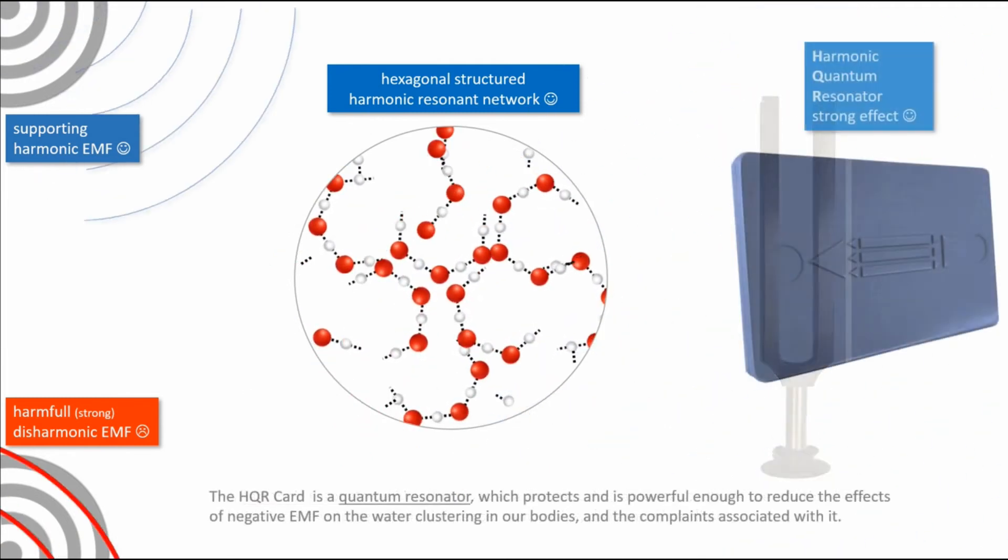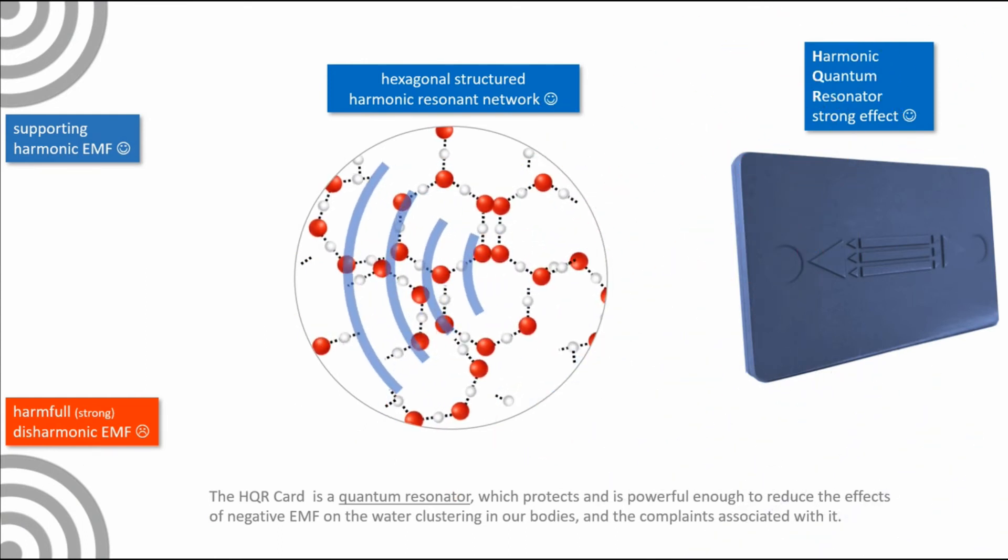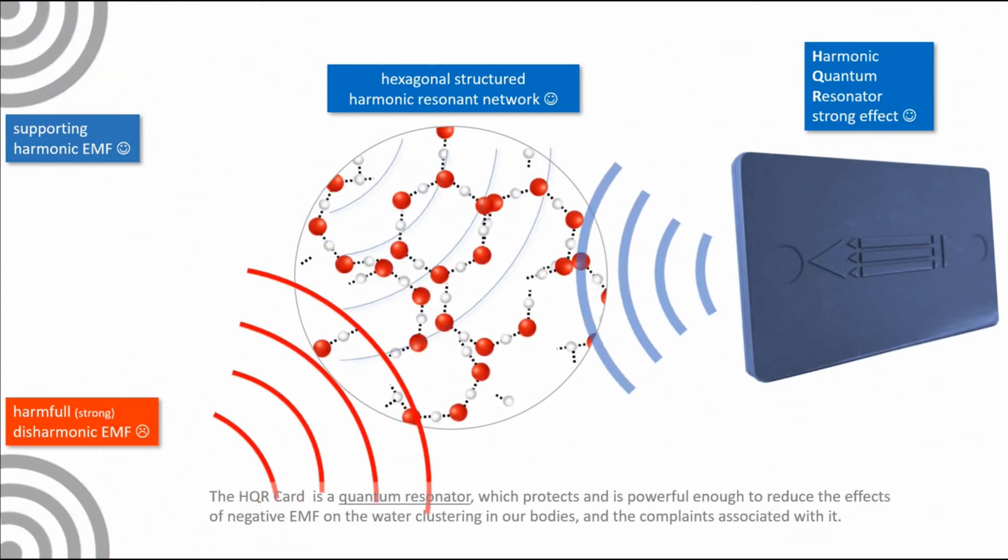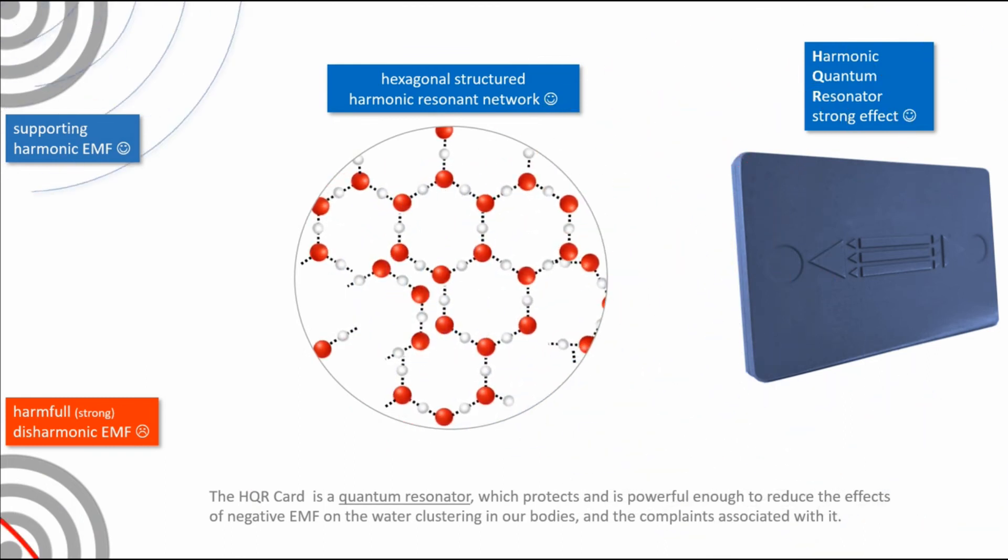The HQR card is a quantum resonator which protects and is powerful enough to reduce the effects of negative EMF on the water clustering in our bodies and the complaints associated with it.